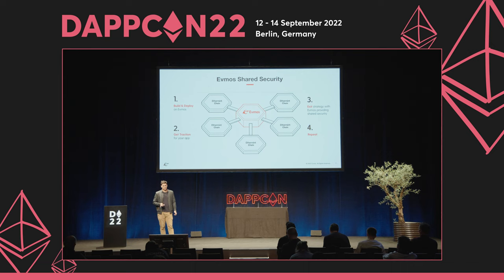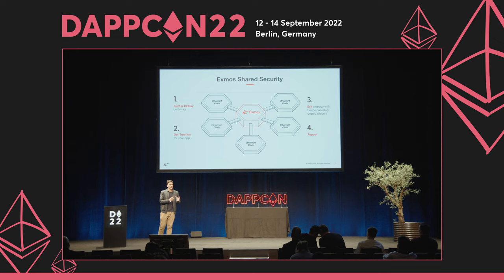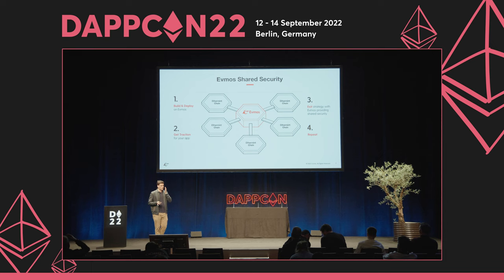As a decentralized application developer, you will first build and deploy on Evmos, get enough traction by leveraging all the unique interoperability functionalities Evmos offers, then exit Evmos into your own sovereign application-specific blockchain through shared security. You don't need to bootstrap your own validator set, and then we'll do the same with other applications in the ecosystem. I'm going to go a little bit deeper into what these mean in concrete.